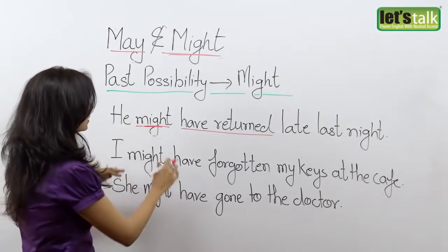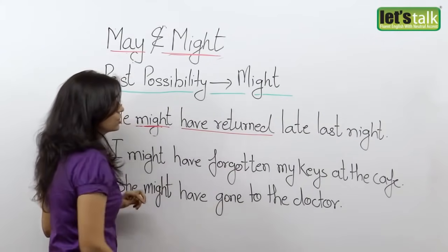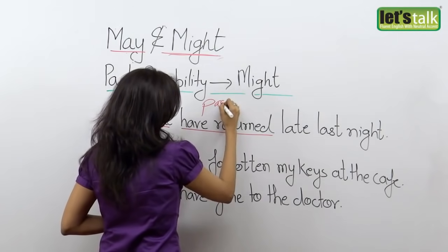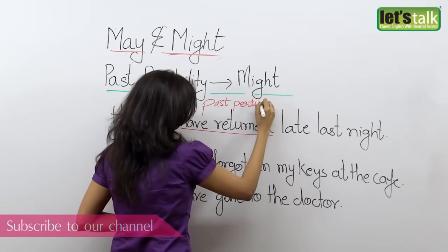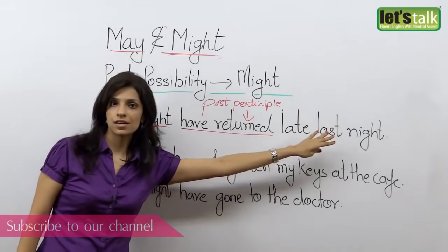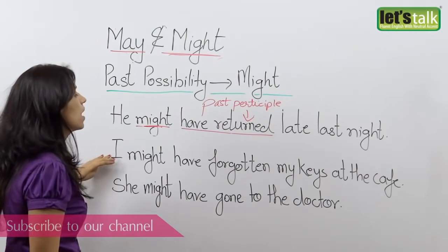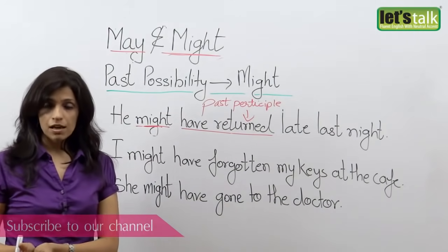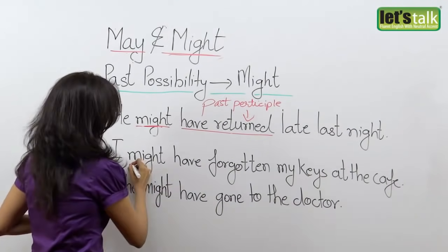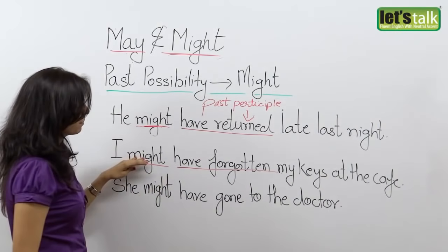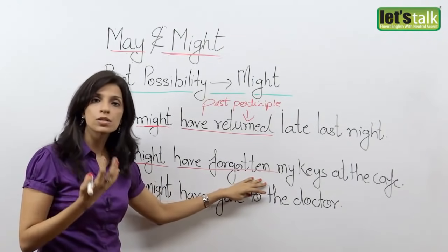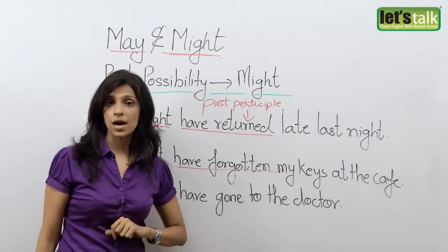After might, we cannot say 'he might return' — it is 'he might have returned.' So you have might, followed by have, and then the verb in the past participle. For example, 'He might have returned late last night.' In my next example, 'I might have forgotten my keys at the cafe' — I've left the cafe, reached the office, can't find my keys, and I'm not sure. So: might have with the verb in the past participle. That's forget, forgot, forgotten. Use the third form of the verb or past participle along with might have when you talk about a past possibility.